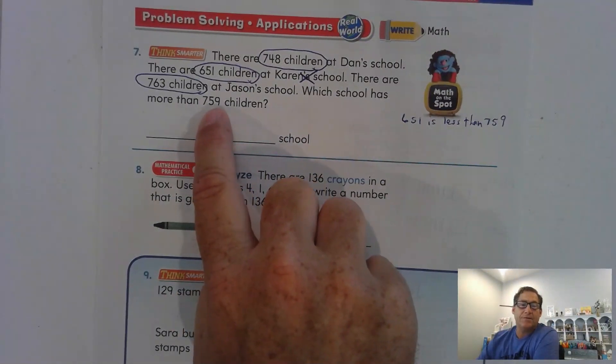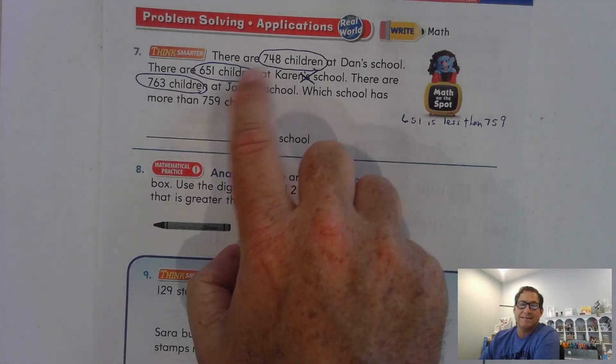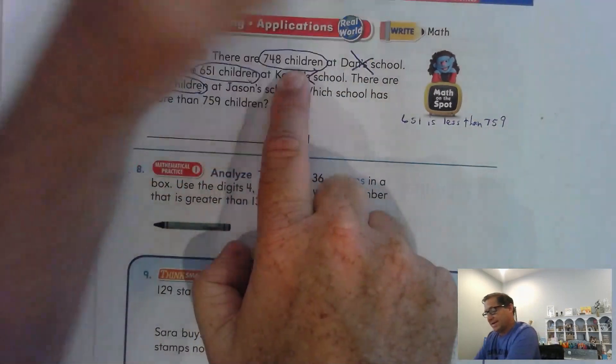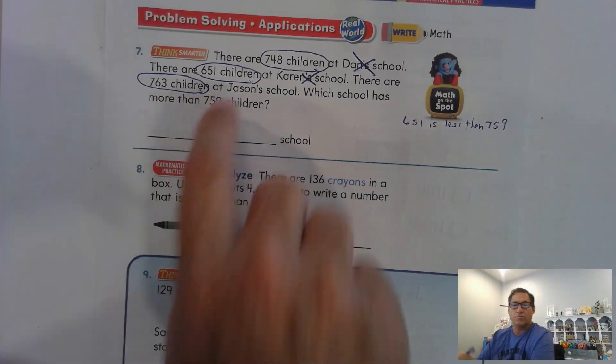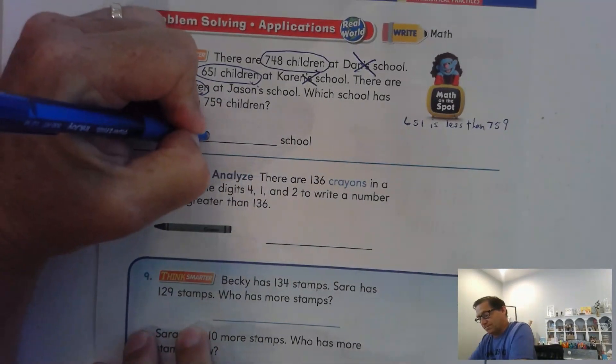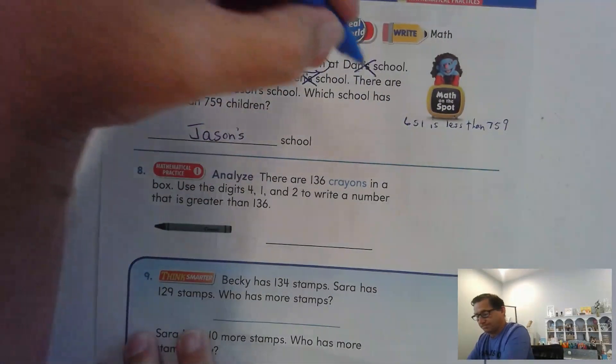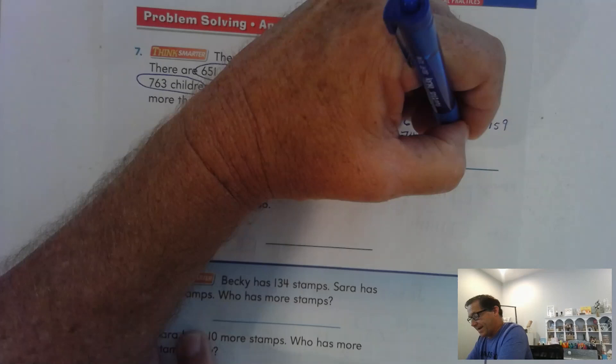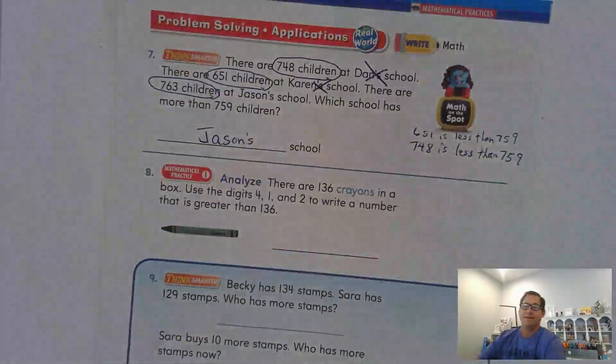So we need, now let's compare the five tens. Five tens, four tens. Well, four is less than five. So it can't be that one. So it's not Dan's school. Is six tens more than five tens? Yes. So Jason's school. Because 748 is less than 759.